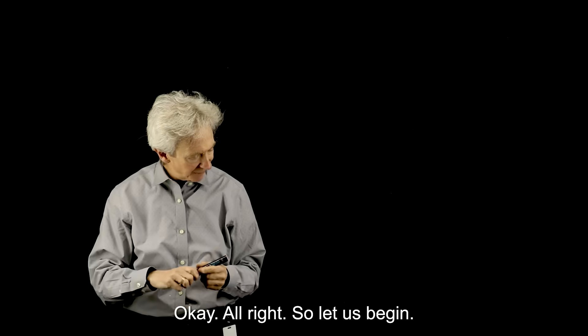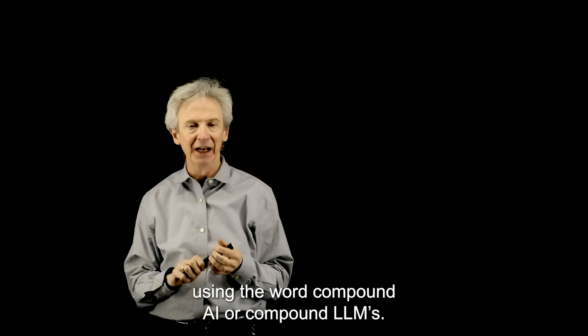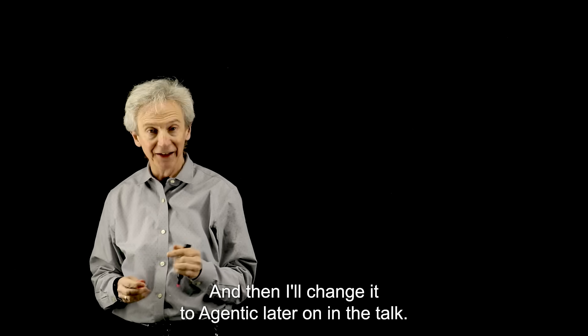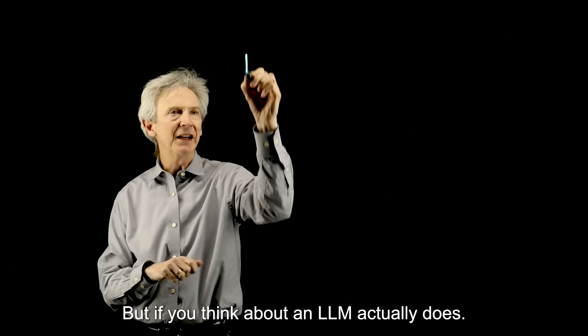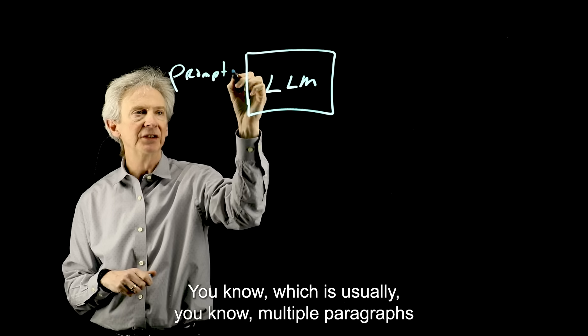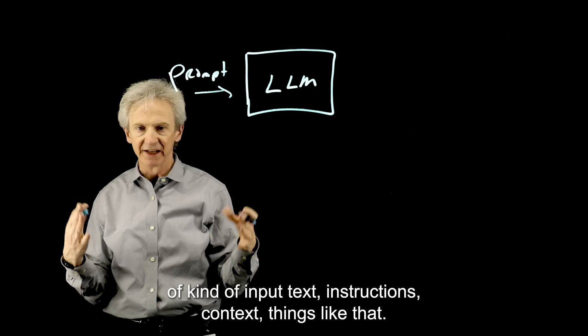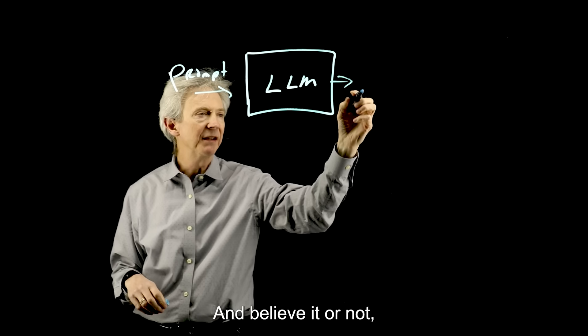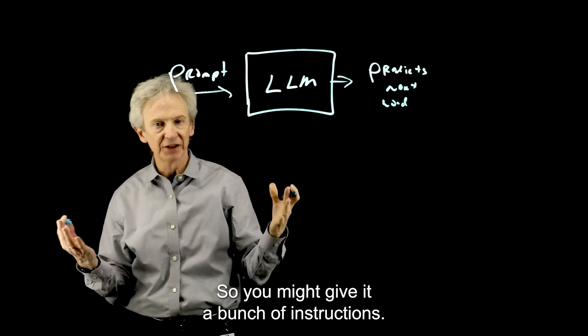So let us begin. First of all, I'm going to start out with using the word compound AI or compound LLMs, and then I'll change it to agentic later on in the talk. But if you think of what an LLM actually does, you give it a prompt, which is usually multiple paragraphs of input text, instructions, context, things like that. And believe it or not, it predicts the next word.